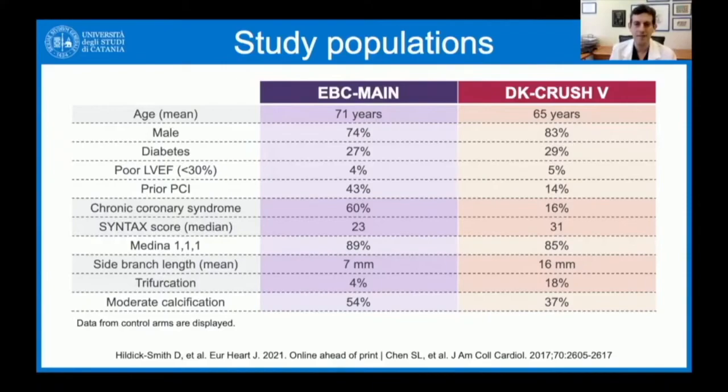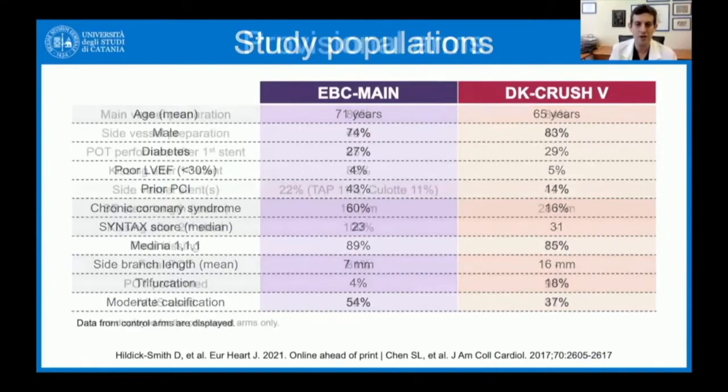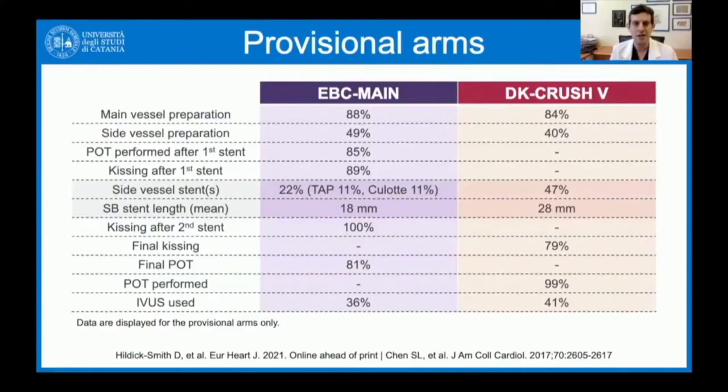Reflecting the broader extension of atherosclerosis, the side branch disease length averaged 7 mm in ABC Main versus 16 mm — more than double — in DK Crush 5, where there were also more trifurcation lesions. Regarding performance of the provisional stenting strategy, main vessel and side vessel preparation rates were similar in both studies.